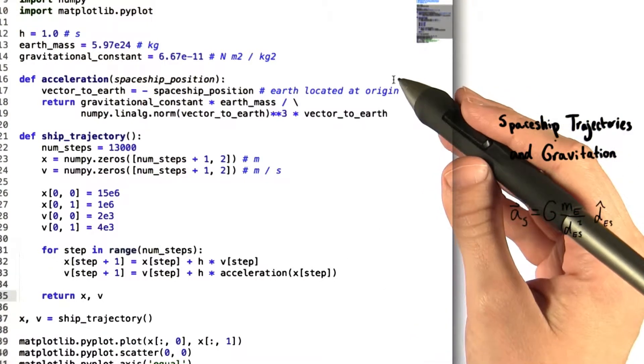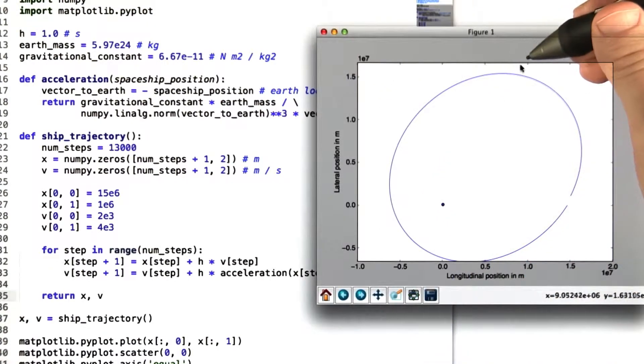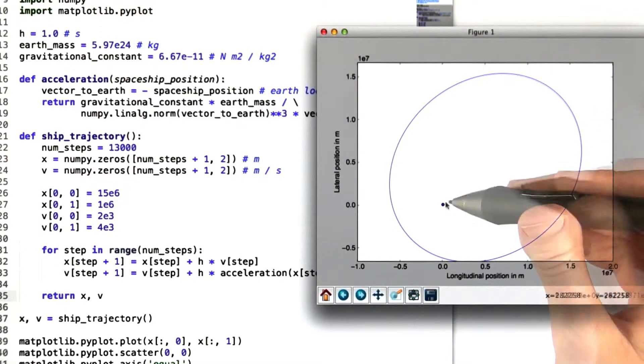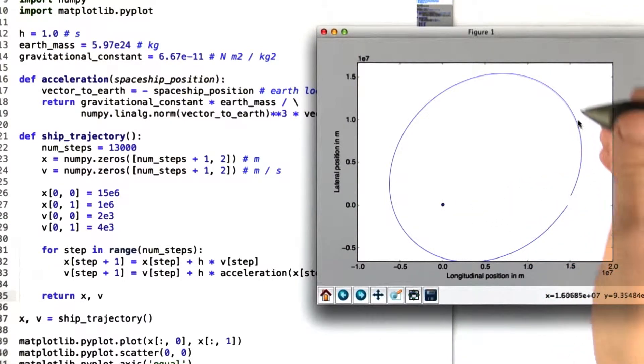Once we have all of this code filled in, we can run the program. And our final product is this picture. This picture looks a lot like we would expect from an elliptical orbit. We have the Earth here and the spaceship moving around it.